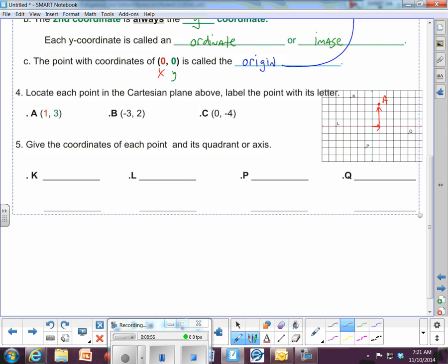Point B, negative three, two. I'm going to do this one in blue. I'm going to go three to the left. You always do the X first. One, two, three to negative three. And then I have to go up to positive two. And point B is going to be right there. Again, you're doing yours up above on the coordinate plane I supplied.